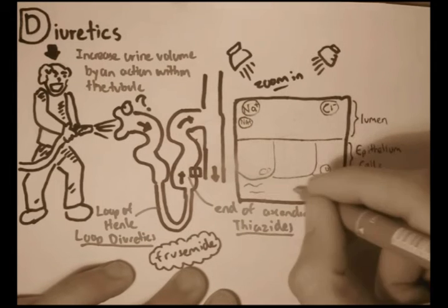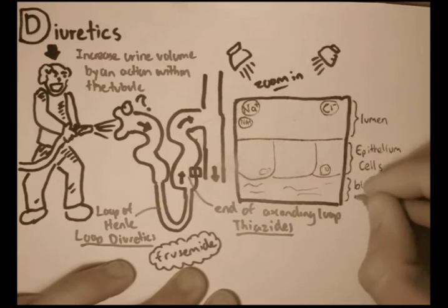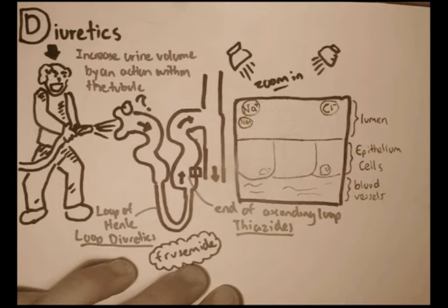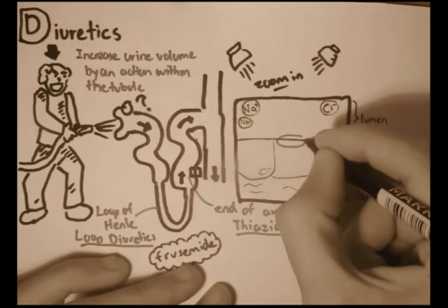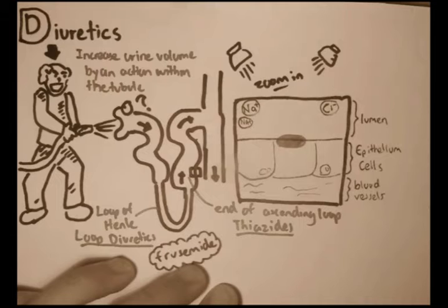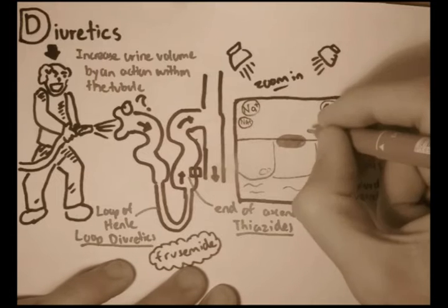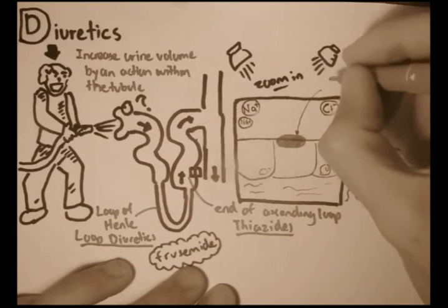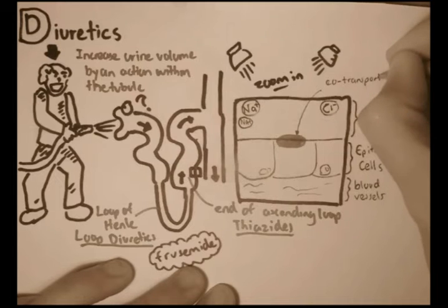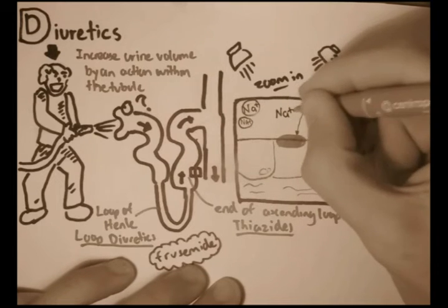And finally, we have the blood vessels, where it gets collected. And here, in between the lumen and the epithelium cells, we have a transporter, a receptor called the co-transporter. So it transports two molecules at once, two different molecules.